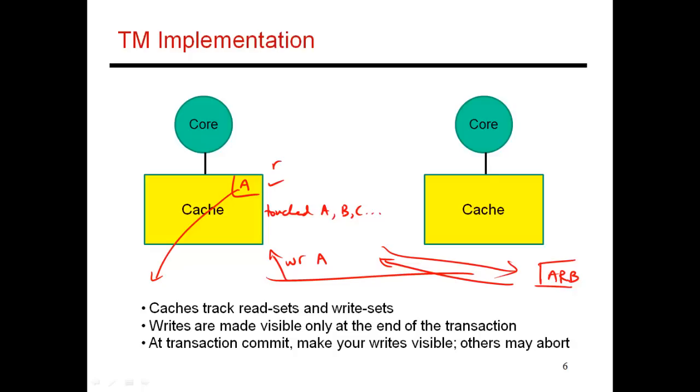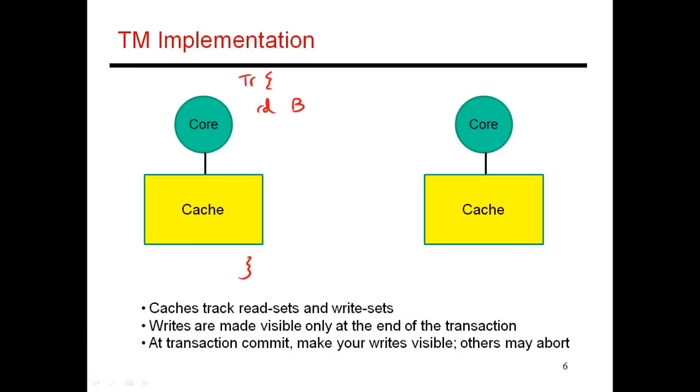So let's look at some other bad scenarios that could happen with these transactions. So you can certainly have starvation. So let me show you how that would happen. So let's assume that this transaction over here is extremely long. And the first thing it does is maybe it reads the value of B.